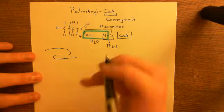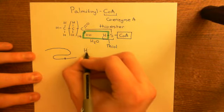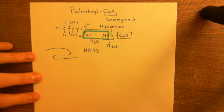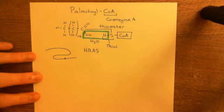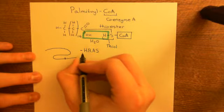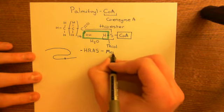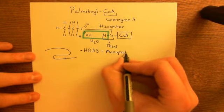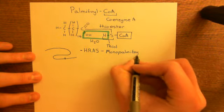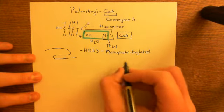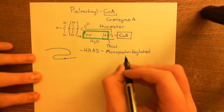For HRAS specifically: in order to move from the endoplasmic reticulum to the plasma membrane, HRAS only needs a single palmitoyl group added onto it — so it is monopalmitoylated. It requires a single palmitic acid molecule added onto a single cysteine residue within the protein.